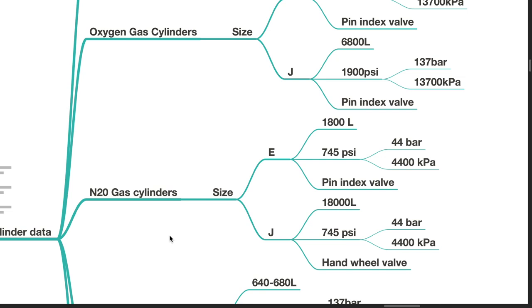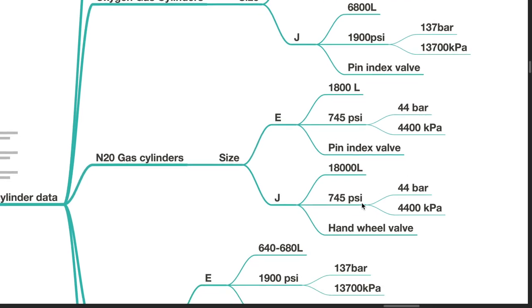Nitrous oxide gas cylinders: size E holds 1800 litres at 44 bar or 745 psi and it uses a pin index valve.